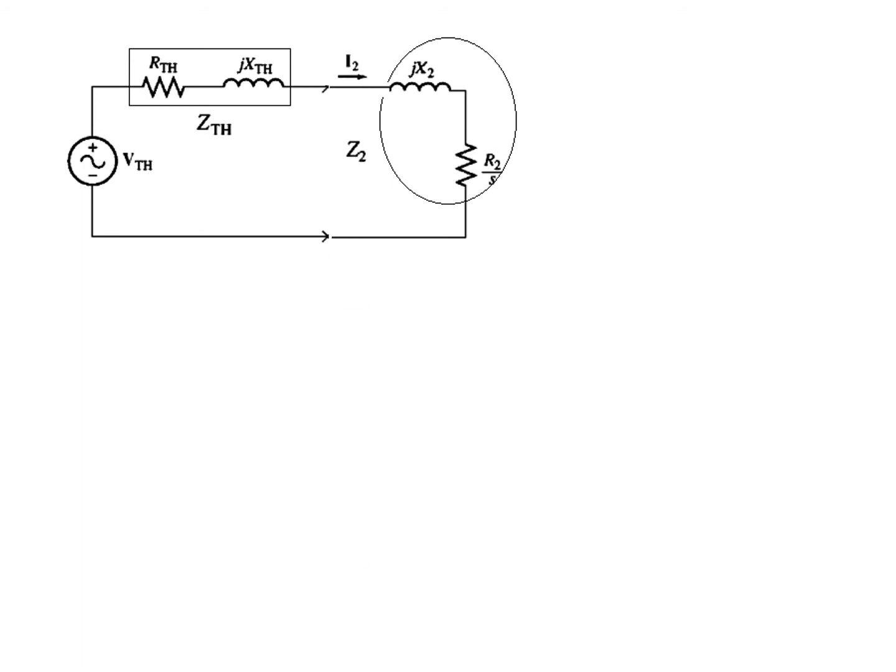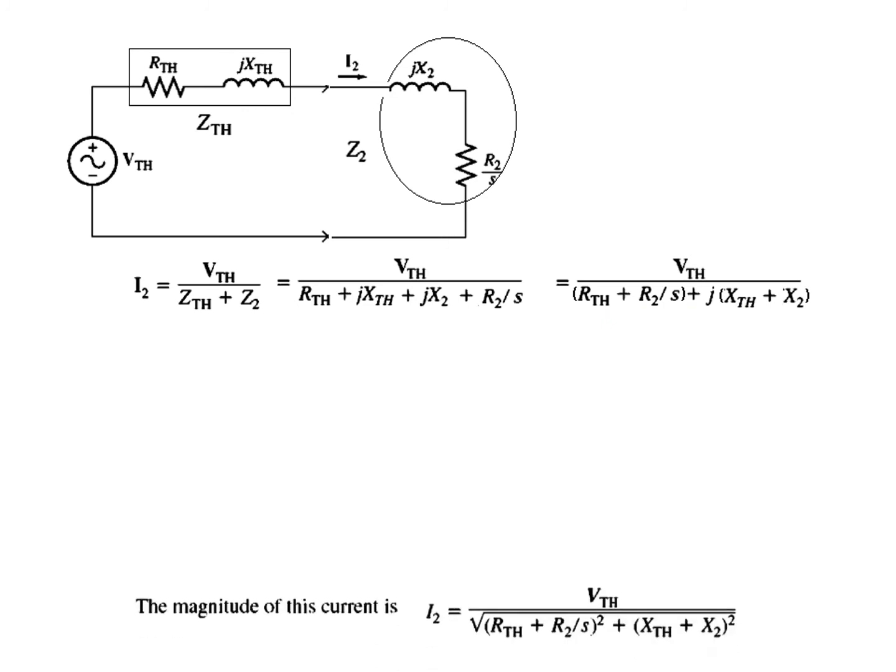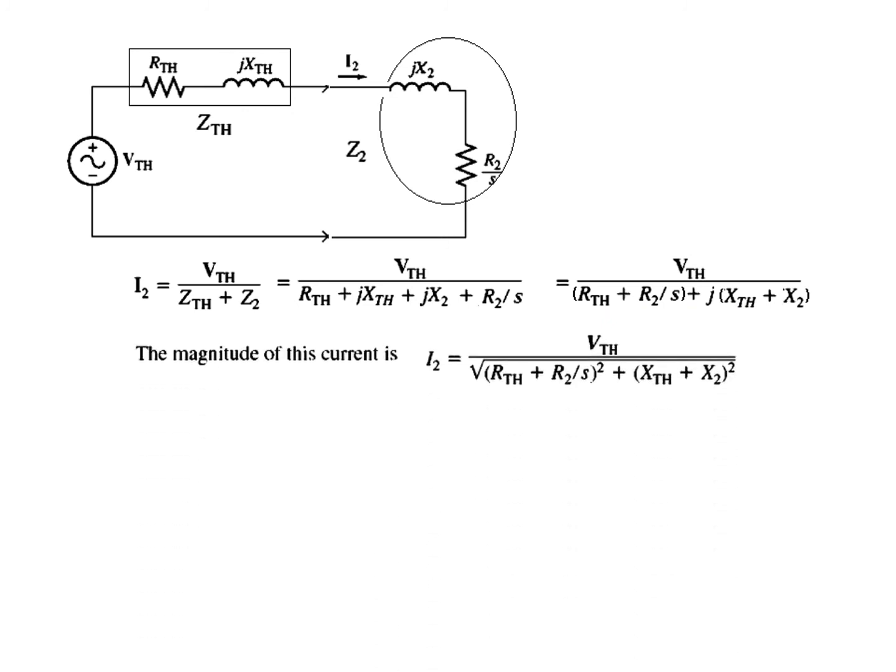And now we need to find I_2. So I_2 is the V_Thevenin divided by these two impedances. Putting the values of the impedances, collecting the real terms and imaginary terms. And now we can take the magnitude, so real squared plus imaginary squared under root. So this is the magnitude of current I_2.